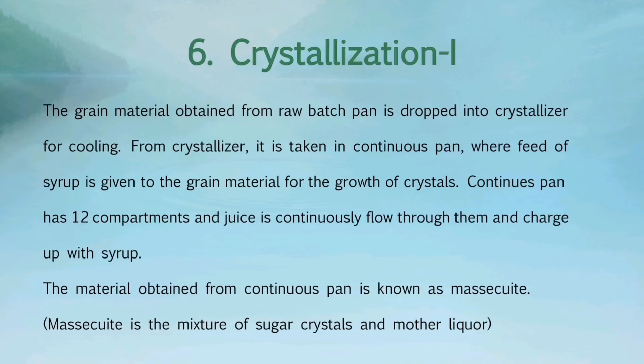After that, the process of crystallization is used. The grain material obtained from the raw batch pan is dropped into a crystallizer for cooling. From the crystallizer, it is taken into a continuous pan, where feed of syrup is given to the grain material for the growth of crystals. The continuous pan has 12 compartments and juice continuously flows through them and is charged up with syrup. The material obtained from the continuous pan is known as massecuite, which can be defined as a mixture of sugar crystals and mother liquor.